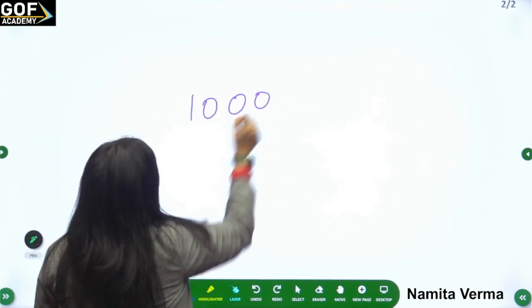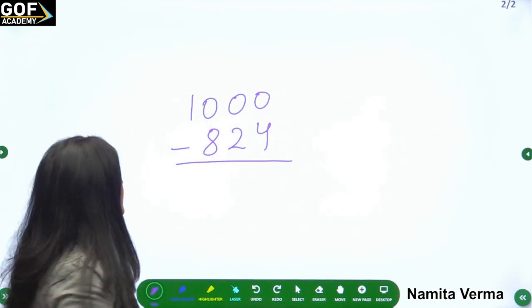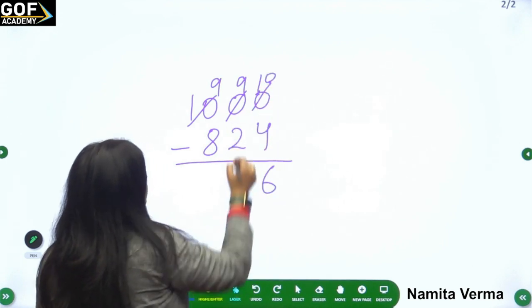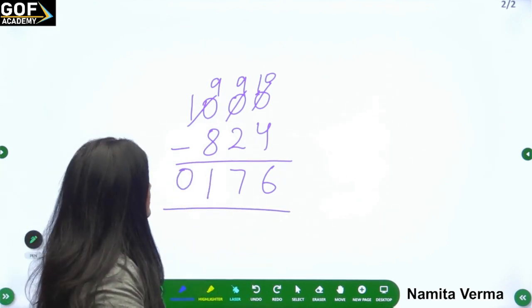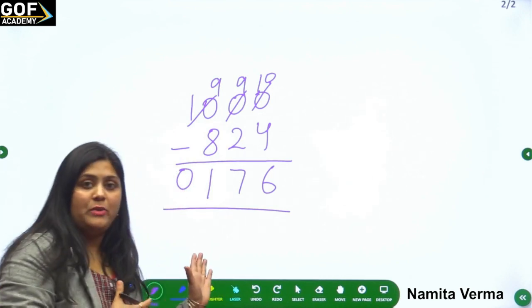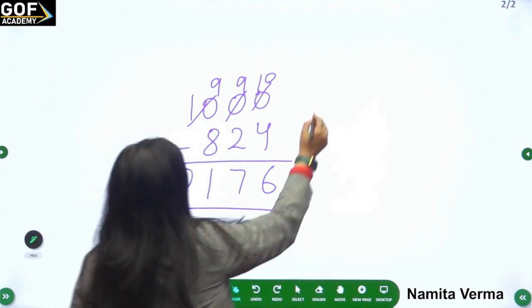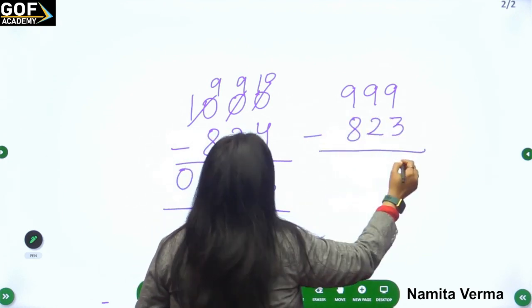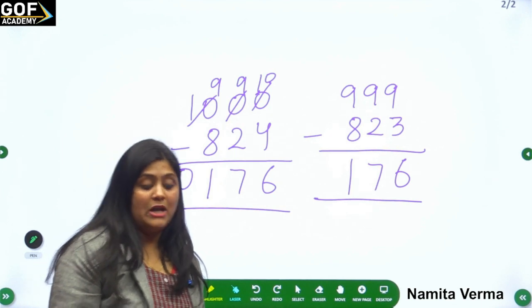Let's do another example: 1000 minus 824. Using regrouping: it becomes 9, 9, and 10 — so 10 minus 4 is 6, 9 minus 2 is 7, 9 minus 8 is 1 — answer is 176. Now using the trick: 999 minus 823 — 9 minus 3 is 6, 9 minus 2 is 7, 9 minus 8 is 1 — same answer: 176!